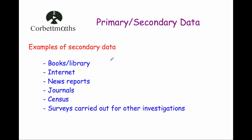Let's look at examples of where secondary data may come from. It may come from books within a library or elsewhere online — a common source of secondary data. News articles and news reports, journals, the census, and surveys that were carried out for other investigations are all sources of secondary data. This is data collected by somebody else for another purpose and then used subsequently.